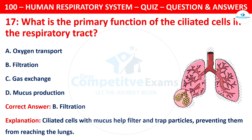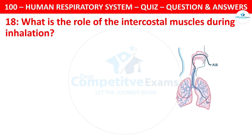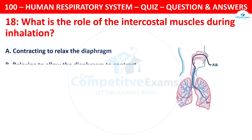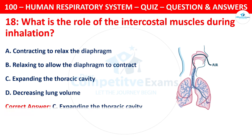Question 18. What is the role of the intercostal muscles during inhalation? Your options are: contracting to relax the diaphragm, relaxing to allow the diaphragm to contract, expanding the thoracic cavity, or decreasing lung volume. The correct answer is C, expanding the thoracic cavity.